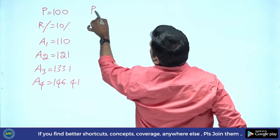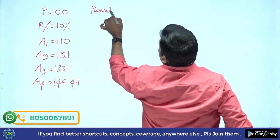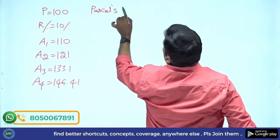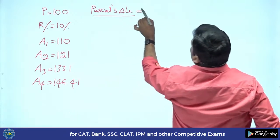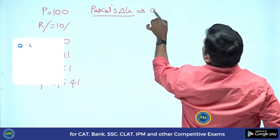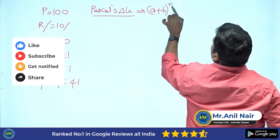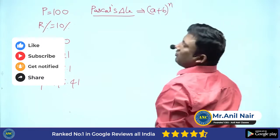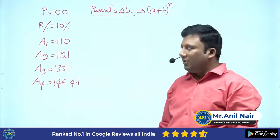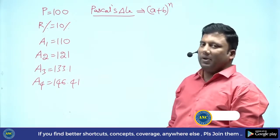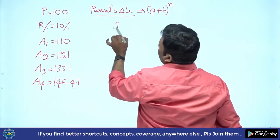Pascal's triangle — why does Pascal's triangle behavior work here? Pascal's triangle is used to determine the coefficients for (a + b) power n.